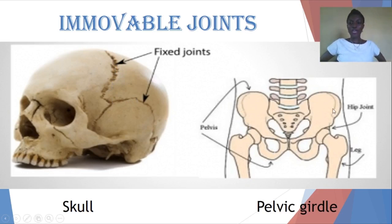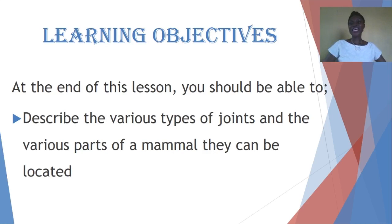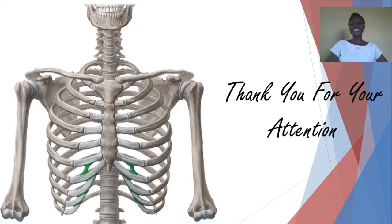This is the final lesson for the skeletal system. Today we looked at the various types of joints and the various parts of a mammal where they can be located. For your assignment, for each of the following joints, state one part of the mammalian body where it can be found: ball and socket joint, hinge joint, and gliding joint. Thank you so much for your attention and see you in our next class.